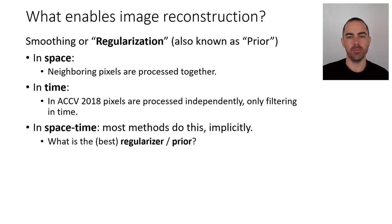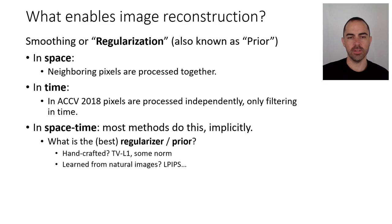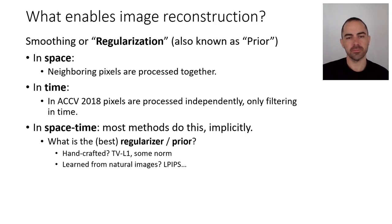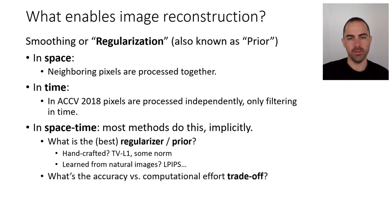Most methods do space-time filtering and space-time regularization. The question then is: what is the best regularizer, the best smoother, the best prior? During the still short history of image reconstruction, some methods used handcrafted regularizers in terms of some norm, while more recent ones using deep learning used data and natural images to guide the solution — you were not looking for any solution in the space of images, but for ones whose statistics were close to those of natural images.